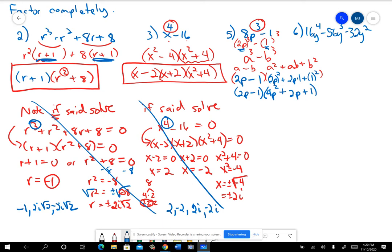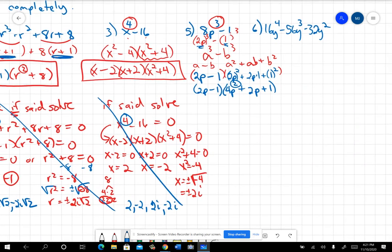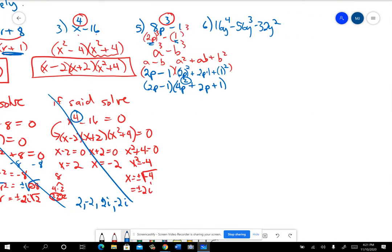Now, if that problem had said for you to solve, we could have set these equal to zero, and this is a quadratic, so we could just use the quadratic formula to figure it out. So these just say to factor, though, so I won't go on and show you what you could do to solve.